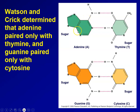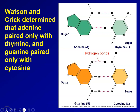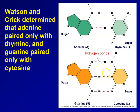Here we see Chargaff's rules with the actual chemical structures of the nitrogenous bases. The little red dots represent hydrogen bonds. Hydrogen bonds are weak and can easily be broken and reformed — a very important property of DNA, because it has the ability to separate these bonds in the formation of new DNA molecules. This is part of DNA replication, which we'll learn about in a later lesson.